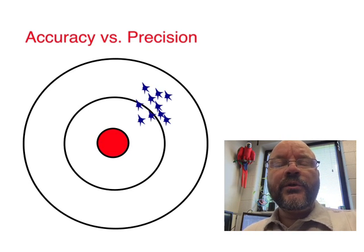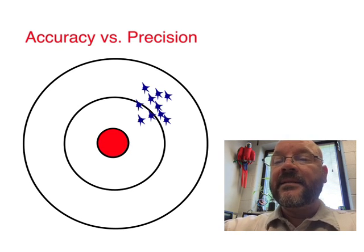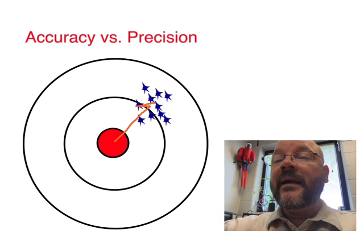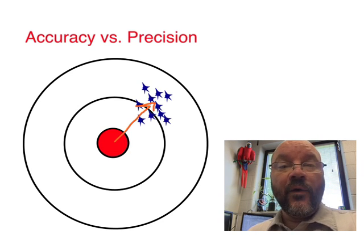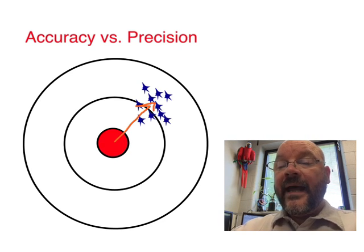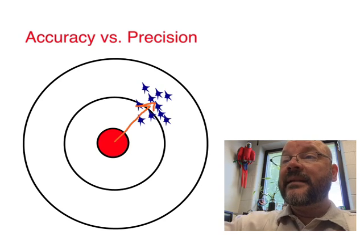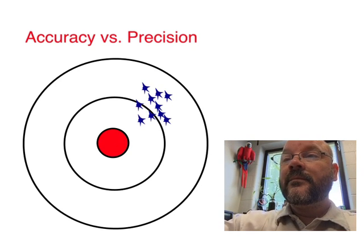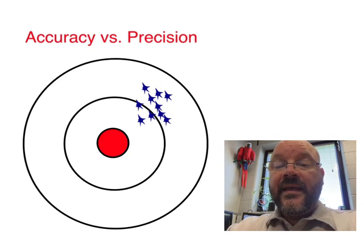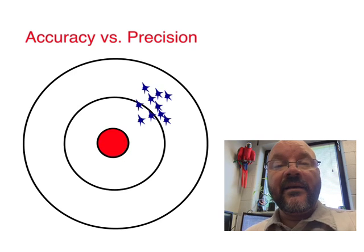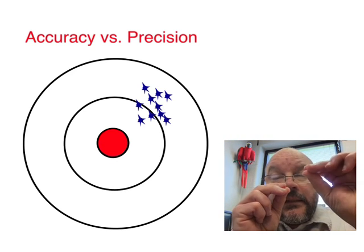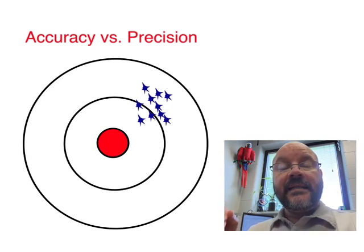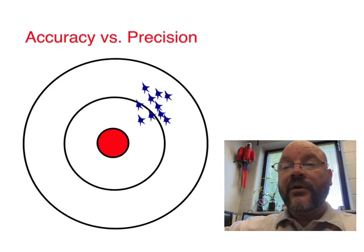And when we use language like that, what we mean is it's not where we would like for it to be. So it's way over there. Now, the thing is, if we had a gun, what we could do is we could make little adjustments to the sights and we could correct this.